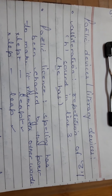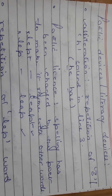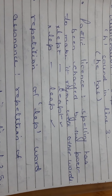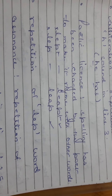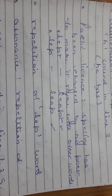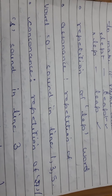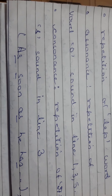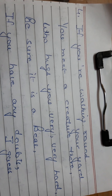The poetic devices used here are: Alliteration — repetition of the 'h' sound in line 3; Poetic License — spelling has been changed by the poet to make it rhyme, 'leapt' should be L-E-A-P-T but the poet used L-E-P-T; Repetition of 'lep' word; Assonance — repetition of vowel sound 'o' in lines 1, 3, and 5; and Consonance — repetition of the 's' sound in line 3.